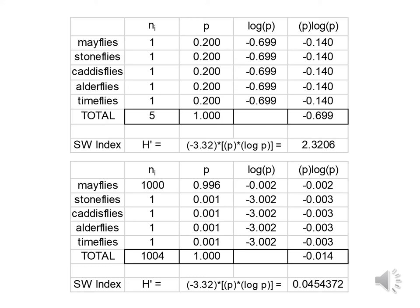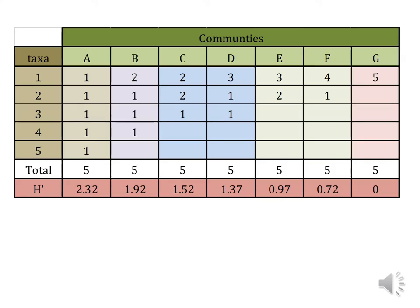This is pretty easy to set up in Microsoft Excel if you want to play around, using my numbers as a reference. Now, let's imagine we are looking at seven communities A through G. Community A is the most diverse with five taxa. Community G is the least diverse with only one taxon. In each sampling of each community we collected the same number of organisms — five organisms. Community A has five organisms representing five different taxa, working out to a Shannon-Weaver value of 2.32, just like our mayflies-stoneflies-caddisflies example.